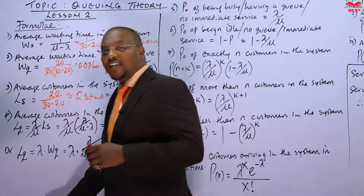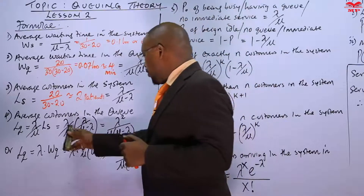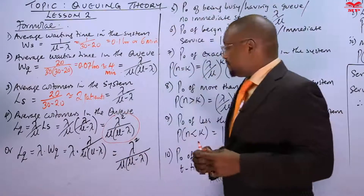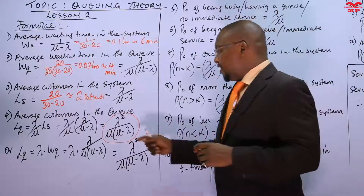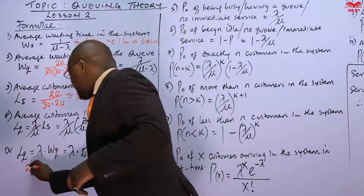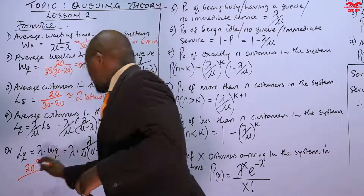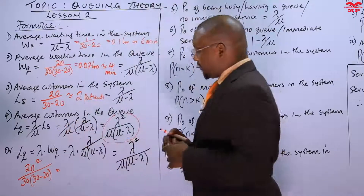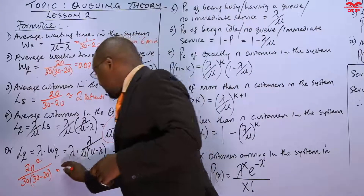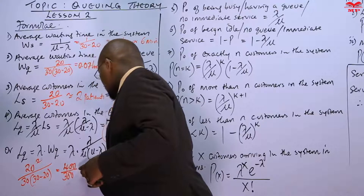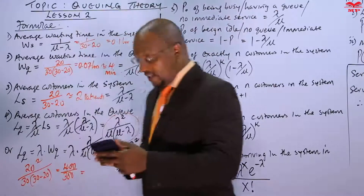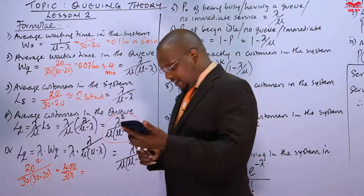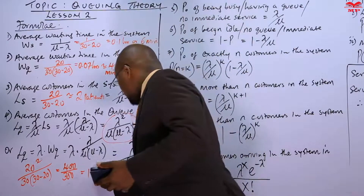When we come to the average customers in the queue, we use the formula: arrival rate squared divided by the service rate times the difference of service and arrival. This is 20 squared divided by 30 times the bracket 30 minus 20, which gives 400 divided by 300, which is 4 over 3. So 20 squared is 400 divided by 300, which gives 1.33. This is 1.33 patients.